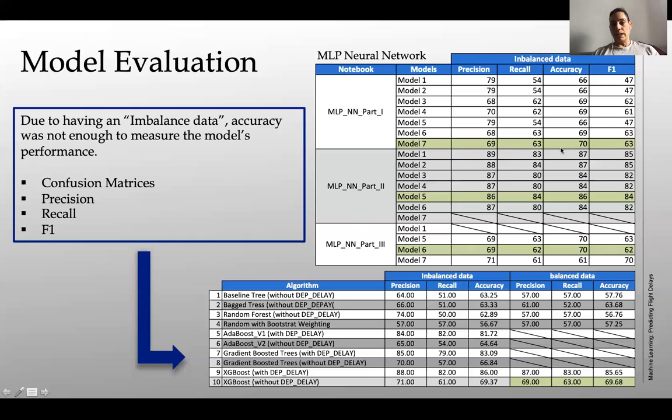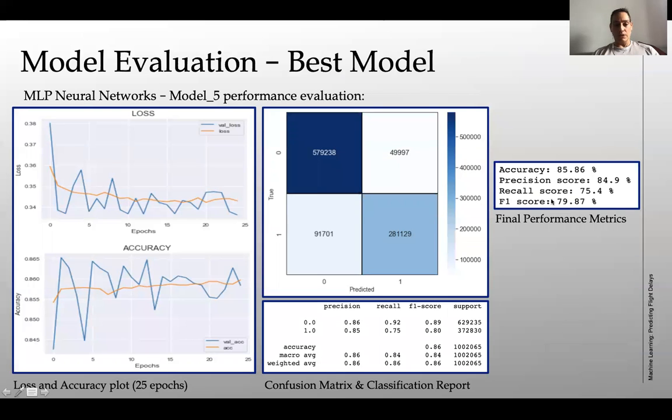This is precision, recall, accuracy, and the F1. You see all the values are above 80, but this is going to be my macro average. So those values are quite good. Not as good as if you add all of those other predictive features, but still they're quite solid.